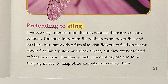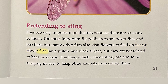Flies are very important pollinators because there are so many of them. The most important fly pollinators are hoverflies and beeflies. Many other flies also visit flowers to feed on nectar. Hoverflies have yellow and black stripes, but they are not related to bees or wasps. The flies, which cannot sting, pretend to be stinging insects to keep other animals from eating them.